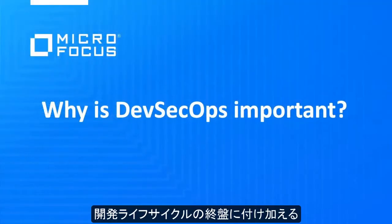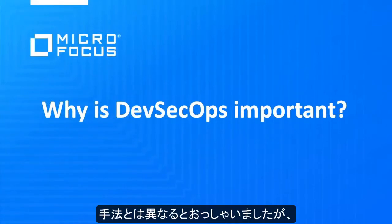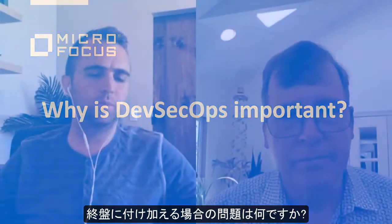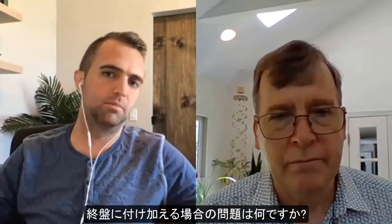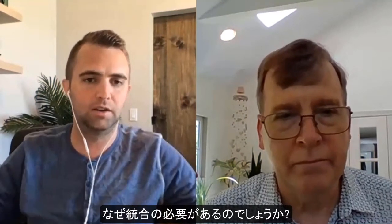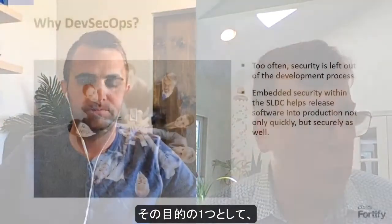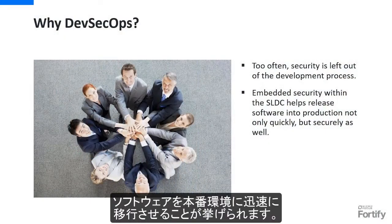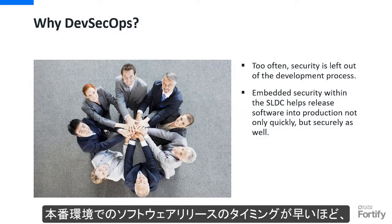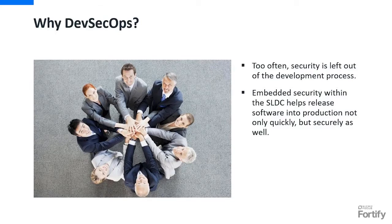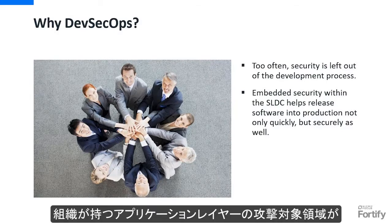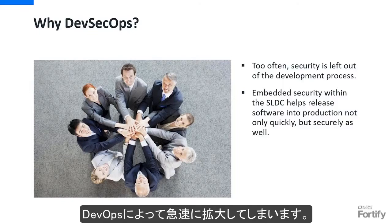Why is DevSecOps important? You mentioned rather than bolting it on later in the development lifecycle — but what are the problems of doing that? Well, if you think about DevOps, part of its purpose is to increase the velocity of getting software out to production. The faster you release software into production, the faster vulnerabilities can be released as well. Without security built in, DevOps can rapidly increase the application layer attack surface that an organization has.